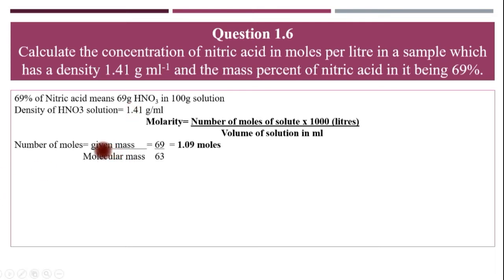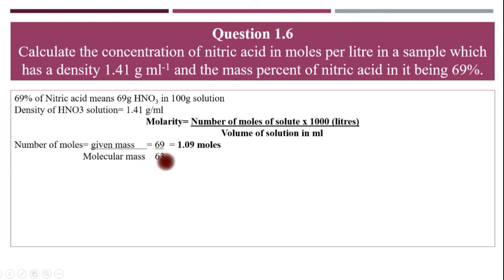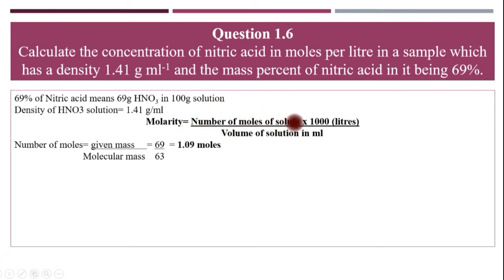Number of moles equals given mass divided by molecular mass. The molecular mass of nitric acid (HNO₃) is 63 g/mol. The given mass is 69 grams (from the 69 percent mass data). So the number of moles equals 69 divided by 63, which gives us 1.09 moles. We now have the numerator for the molarity formula.